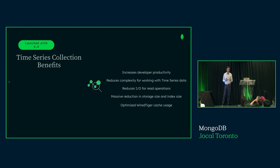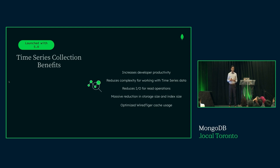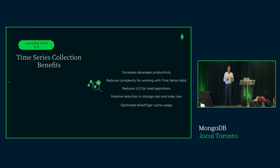We're also using a new technology like a columnar data store underneath, which we're leveraging to optimally store data at the physical layer. Additionally, we're optimizing how we consume the WiredTiger cache — time series data remains compressed in the WiredTiger cache and uses memory more efficiently to serve reads more performantly. Any read queries against the time series collection are more optimized using the time series collection.